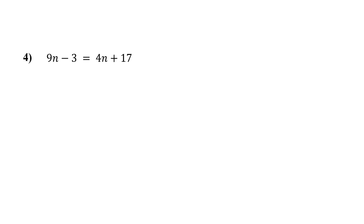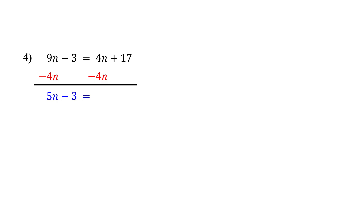To do that, we need to move 4n from the right side to the left. Notice 4n is positive on the right, meaning it's being added. To move it to the left, we do the opposite of addition — we subtract it from both sides. Now let's simplify. On the left, 9n minus 4n gives us 5n. Bring down the minus 3 and the equal sign. On the right, 4n minus 4n is 0 — they cancel out, leaving us with 17.